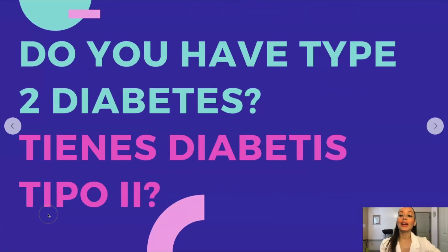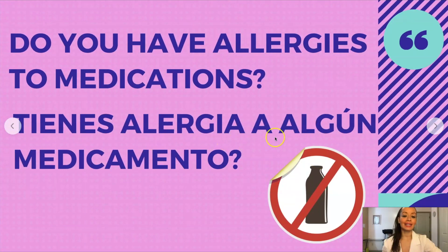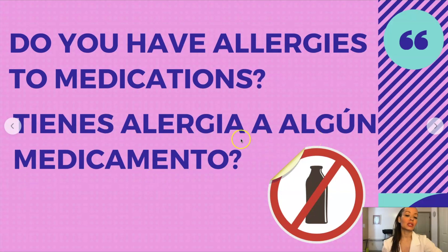'Do you have type 2 diabetes?' is '¿Tienes diabetes tipo 2?' 'Do you have allergies to medication?' is '¿Tienes alergia a algún medicamento?' If you want to say it in plural, add an S: '¿Tienes alergias a algún medicamento?'